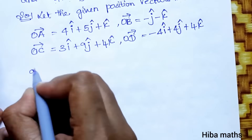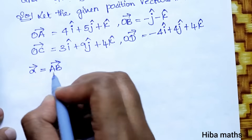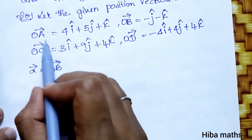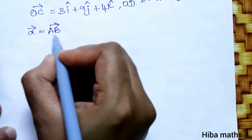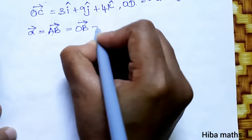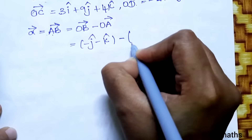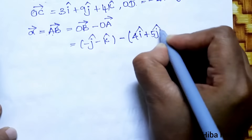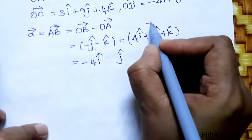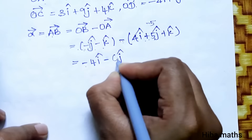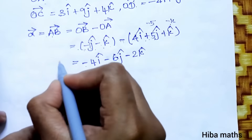Next, we find vectors AB, AC, and AD. AB vector = OB vector minus OA vector. AB = OB - OA = (-j - k) - (4i + 5j + k) = -4i + (−1−5)j + (−1−1)k = -4i - 6j - 2k. This is the AB vector.